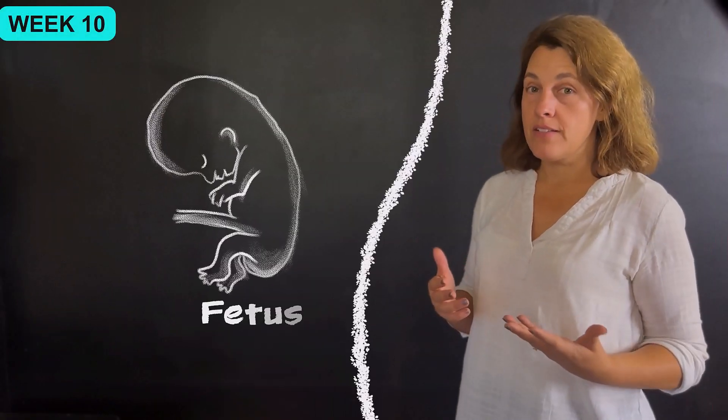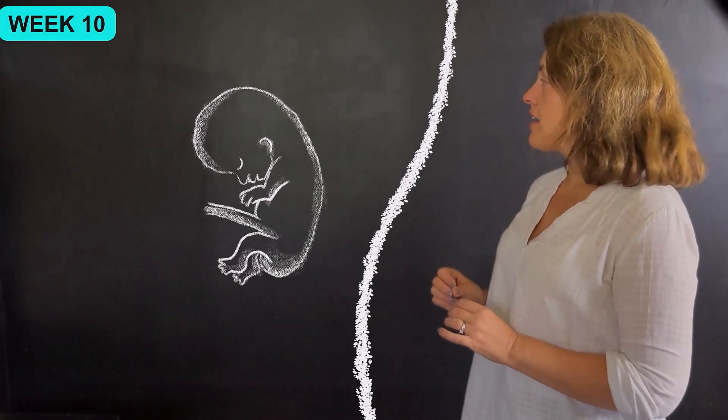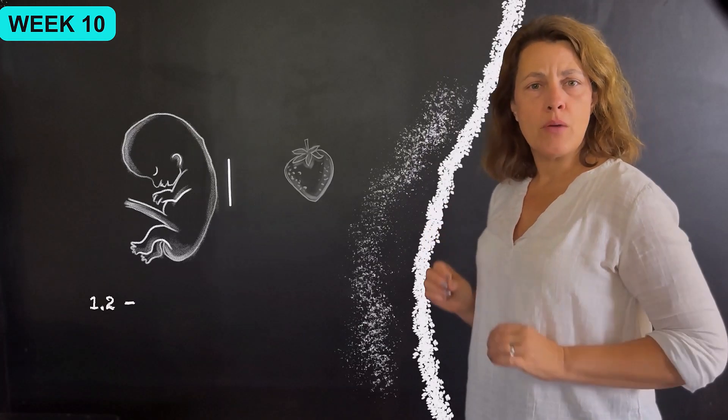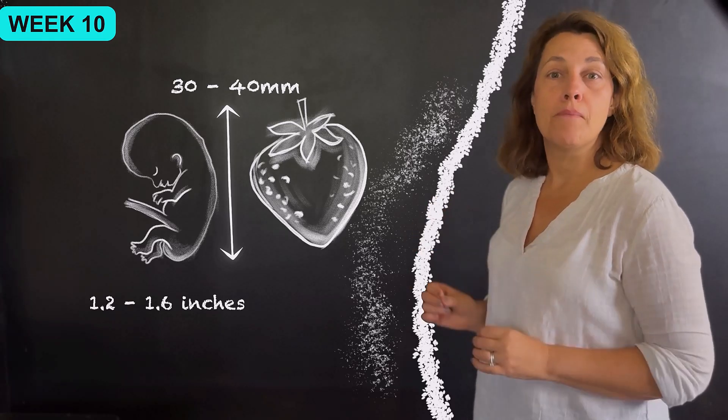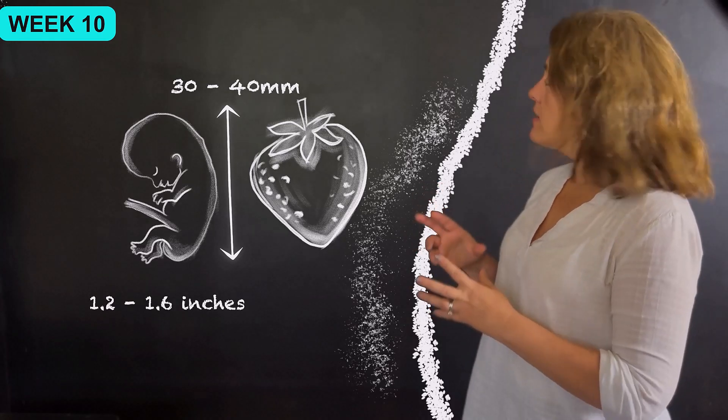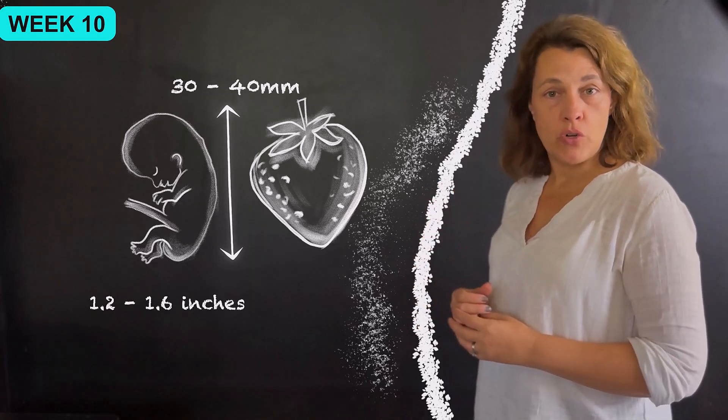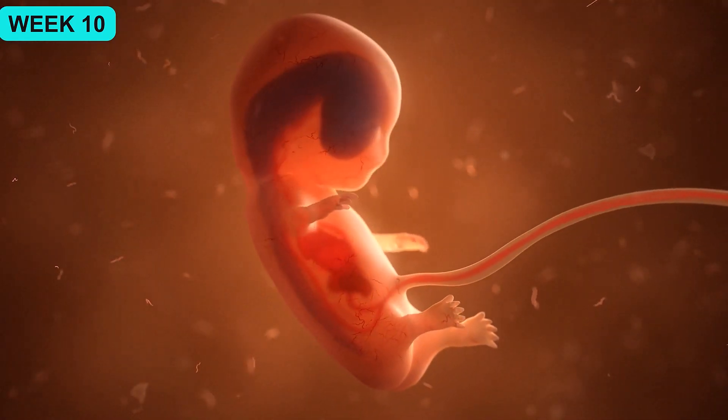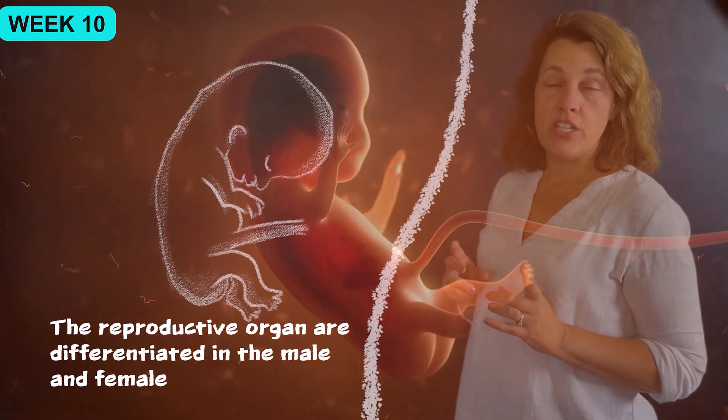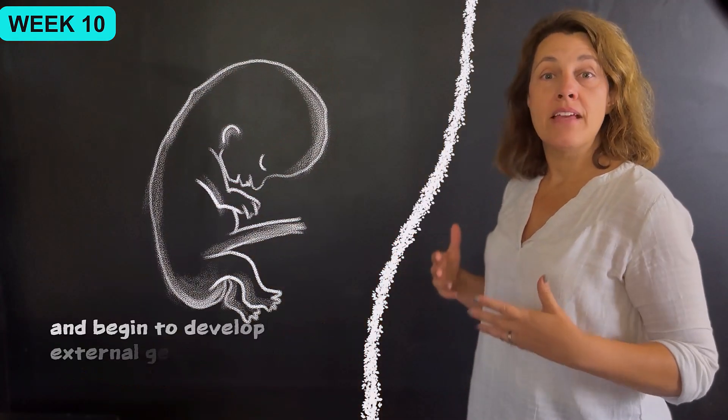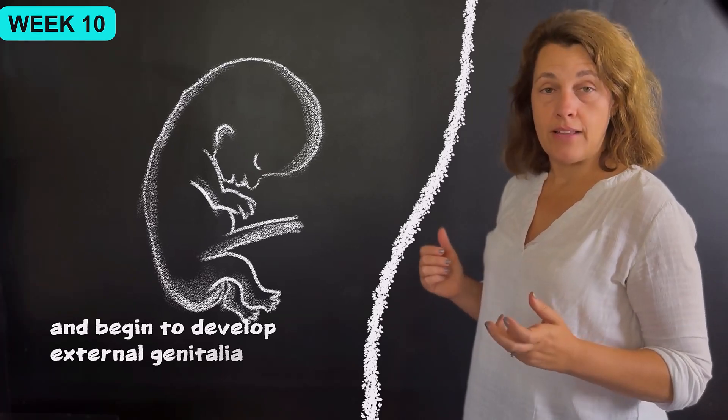The baby is now called a fetus and at this point is about the size of a strawberry, measuring approximately 1.2 to 1.6 inches or 30 to 40 millimeters in length. The fetus continues to grow and mature this week. Major organs like the heart, lungs, and liver are maturing and growing. The reproductive organs are differentiating into male and female and begin to develop external genitalia.